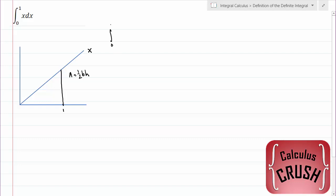We're going to use the definition of the definite integral. So this integral from 0 to 1, x dx, this is equal to a limit as n goes to infinity, the sum i equals 1 to n of f of xi times delta x.